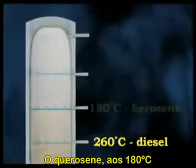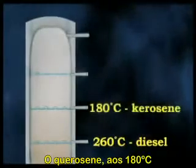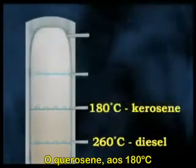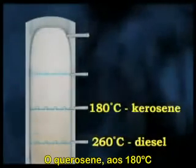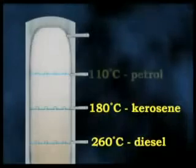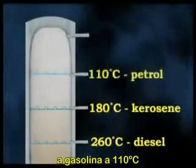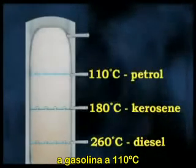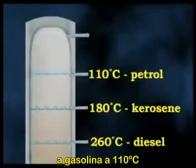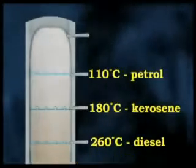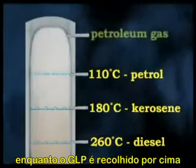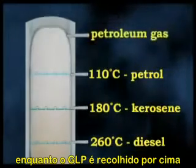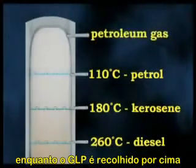At around 180 degrees, kerosene condenses out. Petrol or gasoline condenses out at around 110 degrees, while petroleum gas is drawn off at the top.